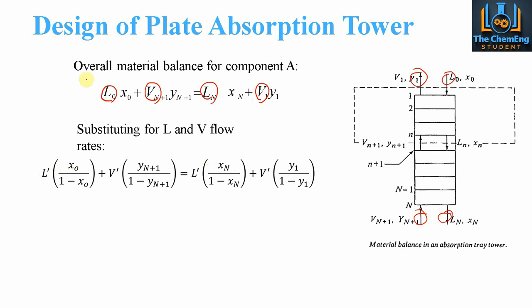Now the reason we do this is because the flow rate of the inert won't change throughout the system. Because here what we would need to know is we would need to know the individual values of L0, Vn+1, Ln, and V1. Whereas by doing it in terms of the inert, all we have here is just two variables. Because that one there is the same as that, and that one there is the same as that. So we've actually halved our degree of freedom.